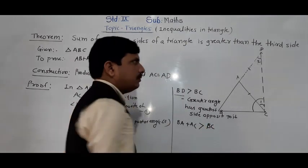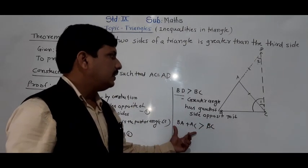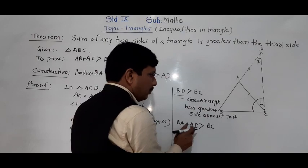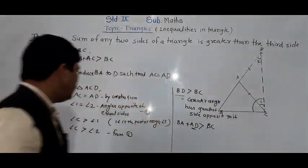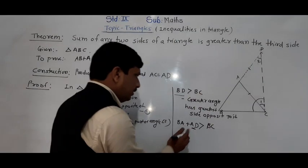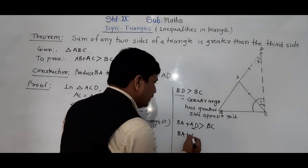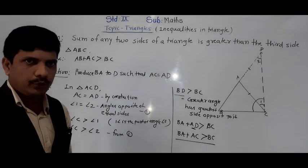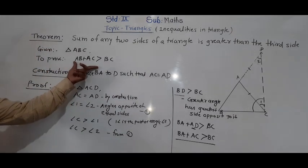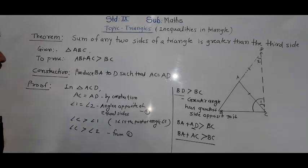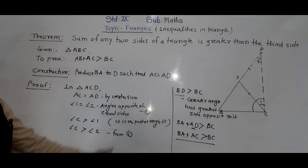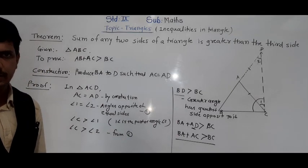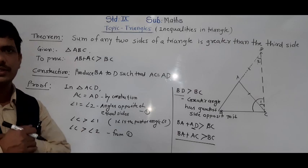BD is greater than BC, but AD is equal to AC. So instead of AD we can write: BA plus AC is greater than BC. BA means AB, so AB plus AC is greater than BC — that was our target. This proves that the sum of any two sides is always greater than the third side, and only then is the construction of that triangle possible.